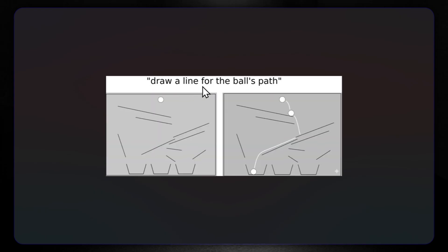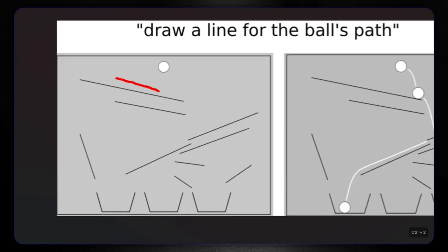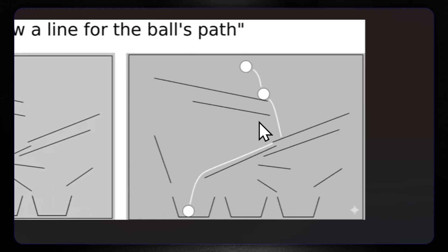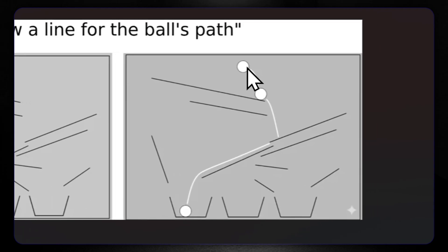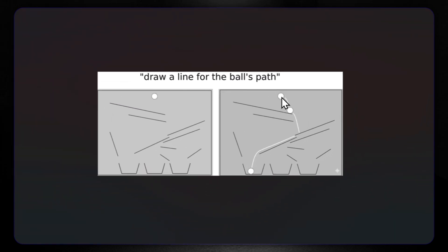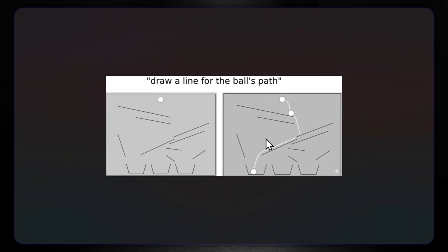Now let's draw a line for the ball's path. Here we have this, and we should be able to draw the trajectory. The AI really did that — one, two, then the ball would kick here and fall to the ground. The AI did all of that apparently.